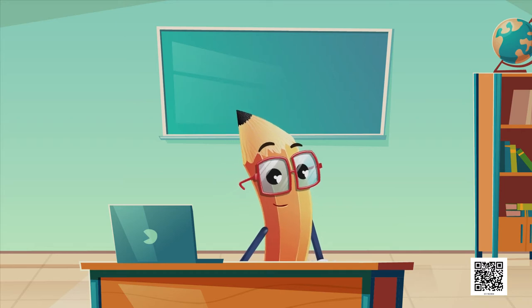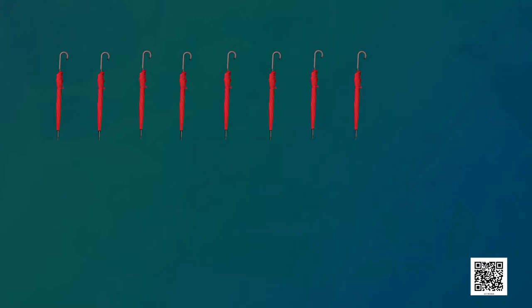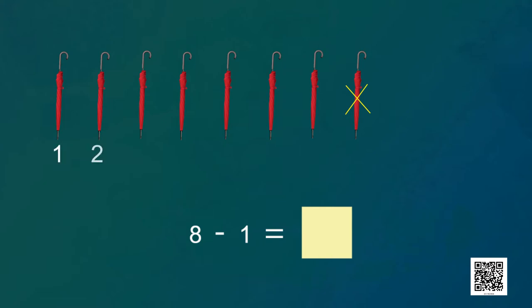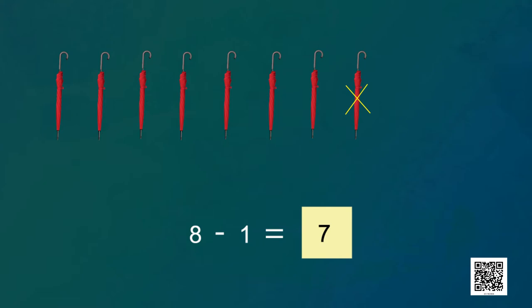To subtract means to take some numbers away. Let me start with eight umbrellas. I will give one umbrella to Apoor, so I need to subtract one from eight. We write it as eight minus one. I just need to take away one umbrella. Now, how many umbrellas are left? On subtracting one from eight I get seven. So eight minus one is equal to seven umbrellas.